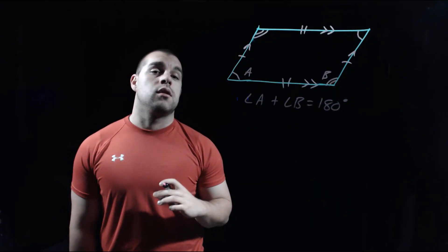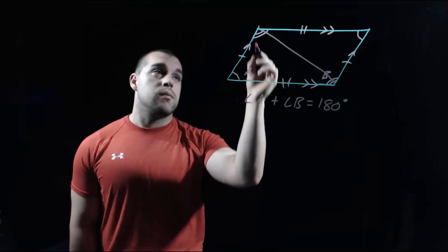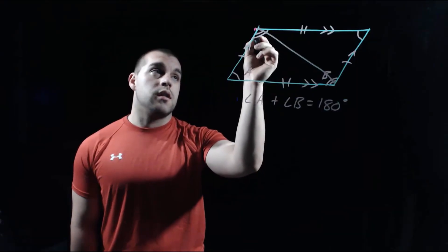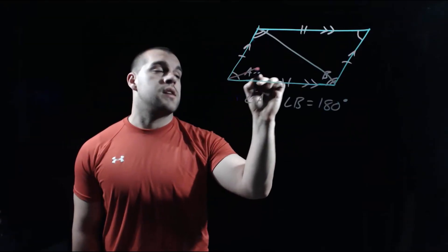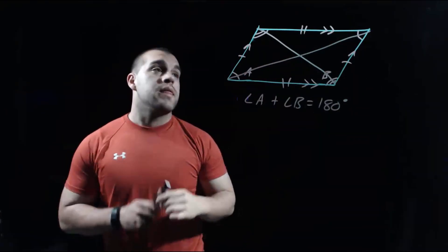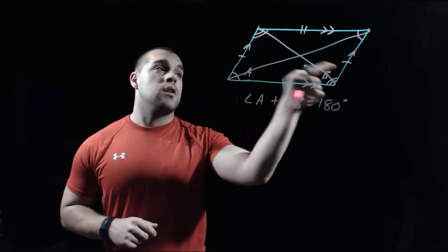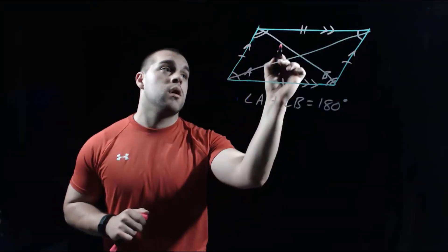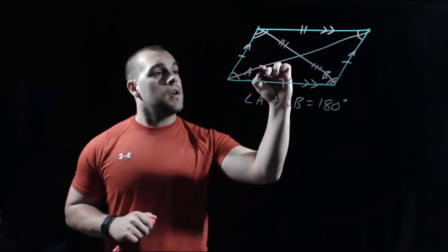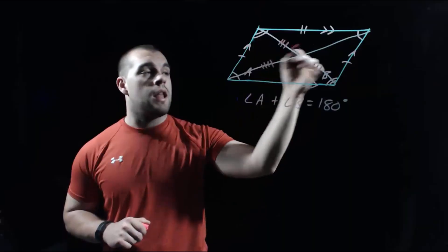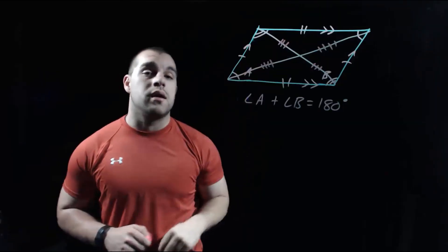Our last property is looking at the diagonals. Diagonals connect opposite vertices of a shape. I'm going to connect this vertex up here to the vertex down in the bottom right-hand corner, and then do the same going the opposite way. Our property says that these diagonals bisect each other — they split each other in half. I've already used one and two congruence markings, so I'll use three and four to mark the four resulting pieces. There's all of our properties illustrated in one picture.